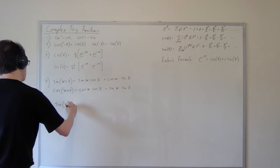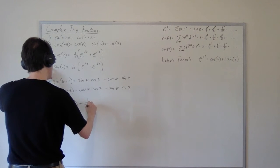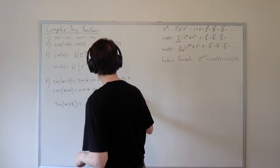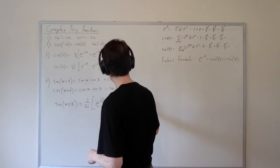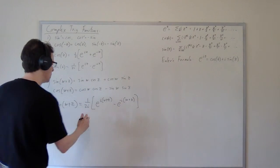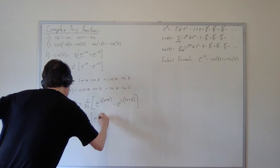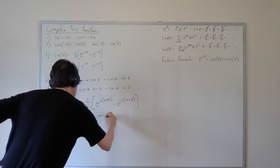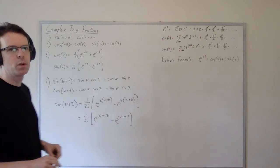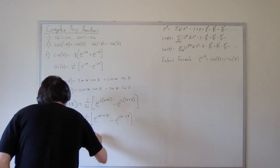So sine of w plus z is, if we apply part 3, it's 1 over 2i times e to the i(w+z) minus e to the minus i(w+z) like so. And now this is e to the iw times e to the iz. That's 1 over 2i times, let's unpack this, e to the iw plus iz. And this is minus e to the minus iw minus iz. And we have a product law for the exponential. And so I'm not going to complete the proof here. I'm just going to indicate what you would have to do.